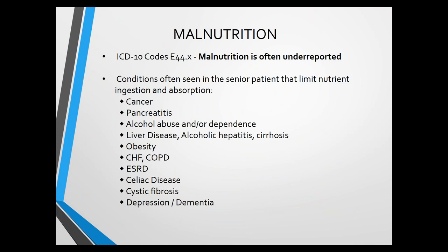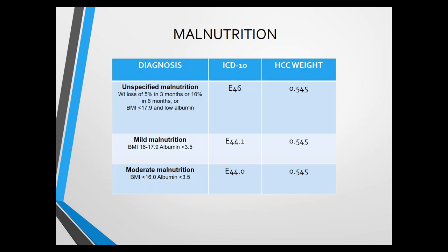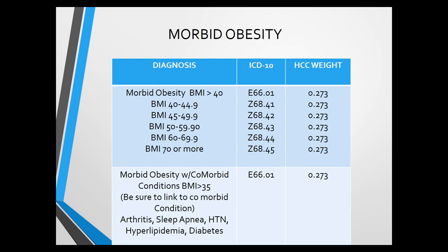Malnutrition is frequently overlooked. Cancer patients, chronic alcohol/liver disease, CHF, COPD, renal disease, celiac, cystic fibrosis, and dementia patients should all be evaluated. Malnutrition codes start at E44.x; unspecified malnutrition requires weight loss of 5% in 3 months, 10% in 6 months, or BMI less than 17.9. Morbid obesity definitely RAFs — anyone over BMI 40, use E66.01. When comorbid conditions exist (arthritis, sleep apnea, hypertension, hyperlipidemia, diabetes), you can use morbid obesity greater than BMI 35 if linked to those conditions. Always record the BMI Z code on every patient you see.